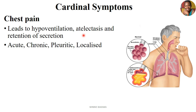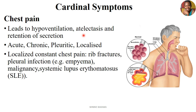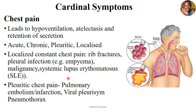Pain can be in many forms: it can be acute, chronic, pleuritic, or localized. Starting with localized pain — this is pain that is constant and does not spread to other areas. Localized pain on the chest refers to rib fractures or trauma, pleural infections like mesothelioma, malignancy, or systemic lupus erythematosus (SLE). So pain on the chest can be acute, chronic, pleuritic, or localized, and the localized form is a constant pain indicative of rib fractures, pleural infections, malignancies, or erythematosis.